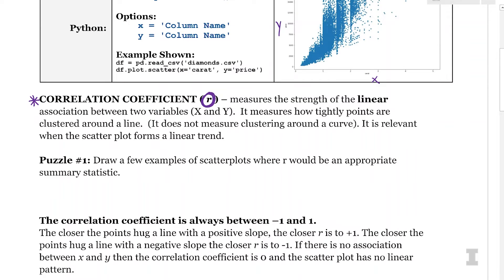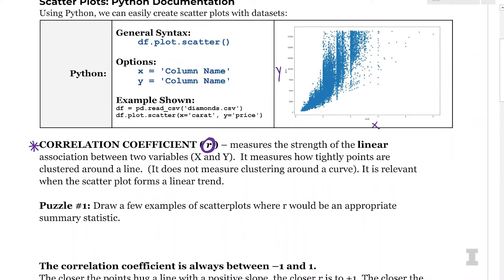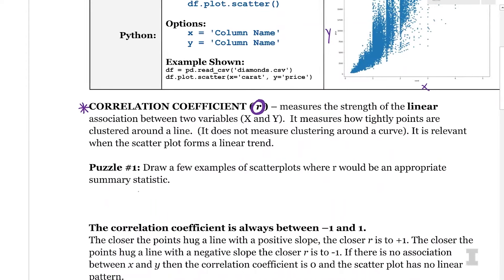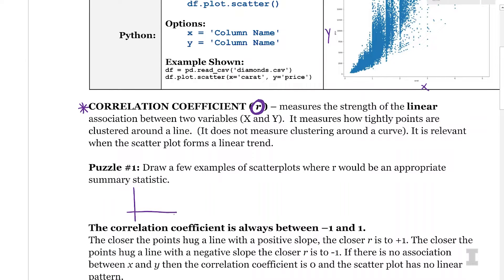So puzzle one says to draw a few examples of scatterplots where r would be an appropriate summary statistic. So we saw that with the diamond data set, the carat and the price looks like r would be appropriate. Anything basically where we can draw a line of best fit through the points. So we could look at something like this with a positive correlation. We could look at something like this with a negative correlation. We could even look at something that had no correlation. And r would correctly tell us that there's no linear pattern there. Something that wouldn't be appropriate is maybe if we saw points that had kind of a pattern that looked like a curve. This would not be good for looking at the correlation coefficient because it wouldn't make sense to draw a line of best fit through those points.